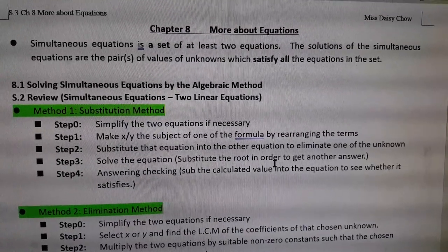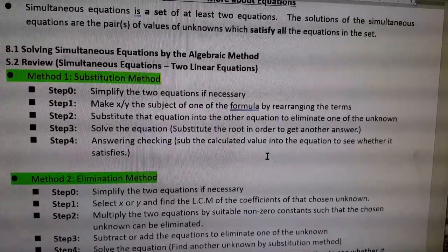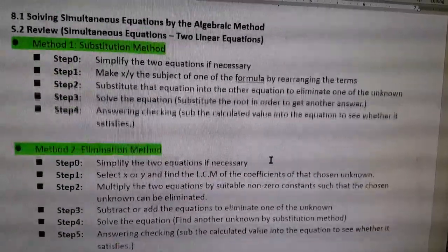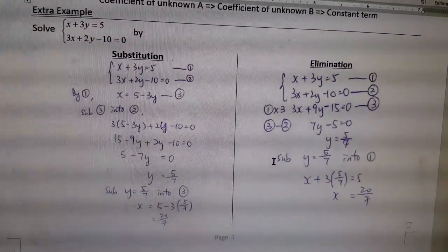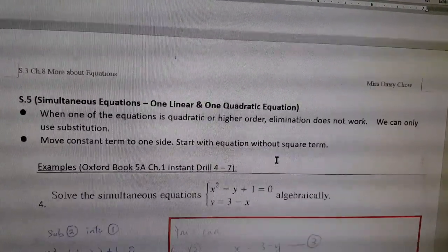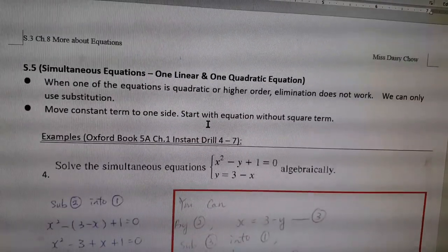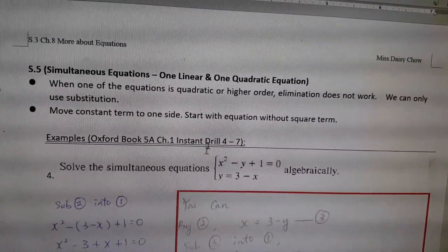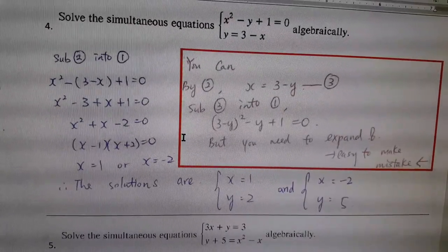So this is S4, Chapter 8, about substitution and elimination method. This one is S2, how to solve the two linear equations into a known. And then I've told you that, how about one linear and one quadratic? We can only use the substitution method.